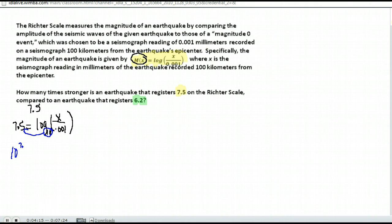So 10 to the 7.5 power is equal to x over .001. That is rewritten in exponential form and from here we're now going to solve for x. Well what would we have to do to solve for x? We just have to multiply both sides by .001 and we're done.